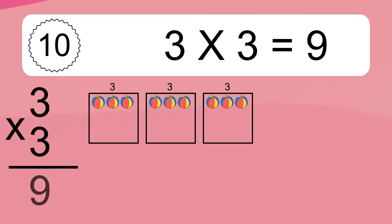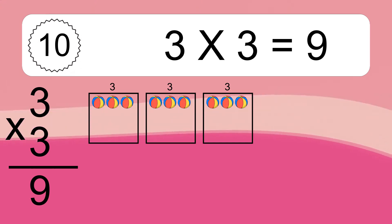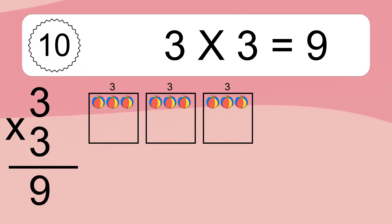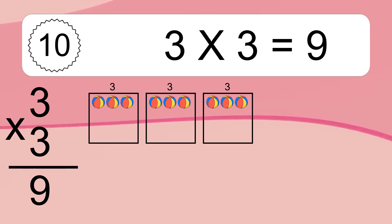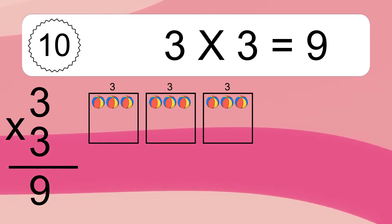3 times 3 equals 9. We have 3 boxes, and each box has 3 colorful balls inside. If you count all the balls in all the boxes together, you will have 3 times 3 balls. This equals 9 balls.